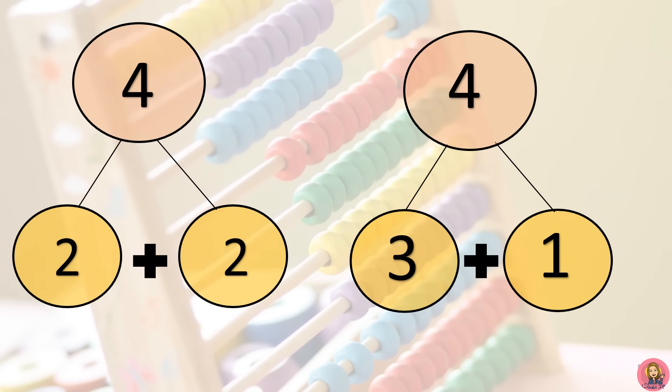We have here another example. This 2 and 2, if we put together, we made the number 4. Or, 3 and 1, we made the number 4.